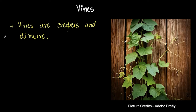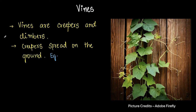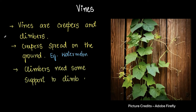The last type is vines, which are of two types: creepers and climbers. Creepers usually grow horizontally on the ground and spread out — an example is watermelon. Climbers, on the other hand, climb up vertically and grow upright, but they need support. For example, a money plant usually needs a support around which it coils up, as you can see in the picture.